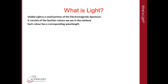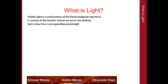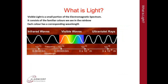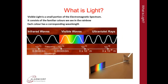What is light? Visible light is a small portion of the electromagnetic spectrum. It consists of the familiar colors that we see in the rainbow. Each color has a corresponding wavelength, and most of you have seen the effect of what happens when white light is passed through a prism — you get this spread of the various colors, or of course, the rainbow.